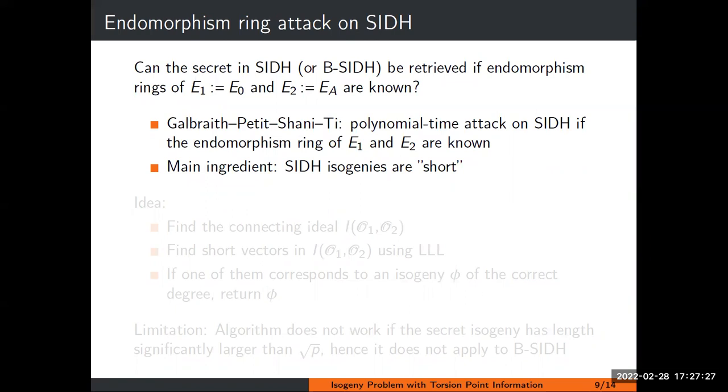However, in SIDH type schemes, which is SIDH or B-SIDH or any variation of SIDH, you have one particular secret isogeny that's your secret. So it's not a priori clear that if you know an isogeny between the two curves, you can also compute the secret isogeny. The first result in this direction was by Galbraith, Petit, and Silva, who showed that in SIDH, you can find the secret isogeny in polynomial time if the endomorphism rings of E0 and EA are also known. The key ingredient is that in SIDH, isogenies are short.